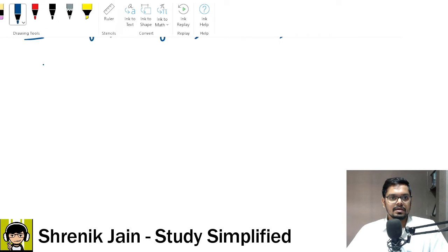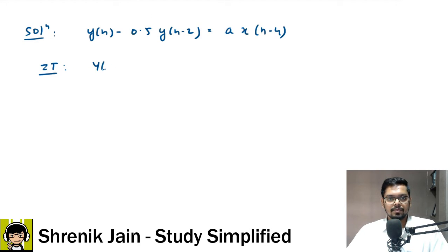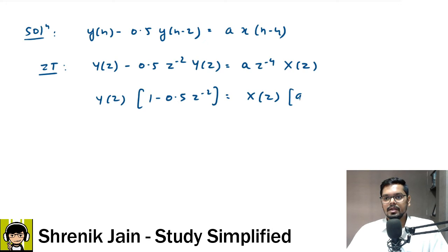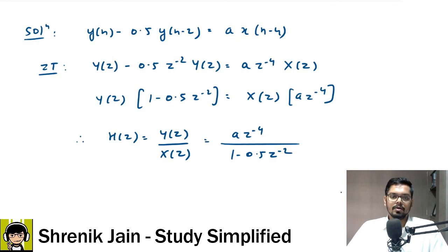The difference equation was Y of N minus 0.5 Y of N minus 2 that is equal to a into X of N minus 4. Just recheck whether I have written correctly or not. Yes, I have written correctly. So, now what's next? What's next is I will do the z transform. Okay. If I do the z transform, then Y of Z minus 0.5 z to the power minus 2 Y of Z that is equal to a into z to the power minus 4 X of Z.